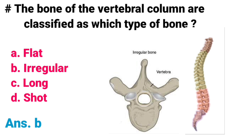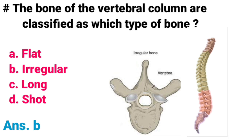The bones of the vertebral column are classified as which type of bone? A) Flat bone, B) Irregular bone, C) Long bone, D) Short bone. Correct answer is option B, Irregular bone. Bones of the vertebral column are classified as irregular bones, which vary in shape and structure and therefore do not fit into any other category. Irregular bones often have complex shapes which help to protect internal organs — for example, the vertebral column protects the spinal cord.